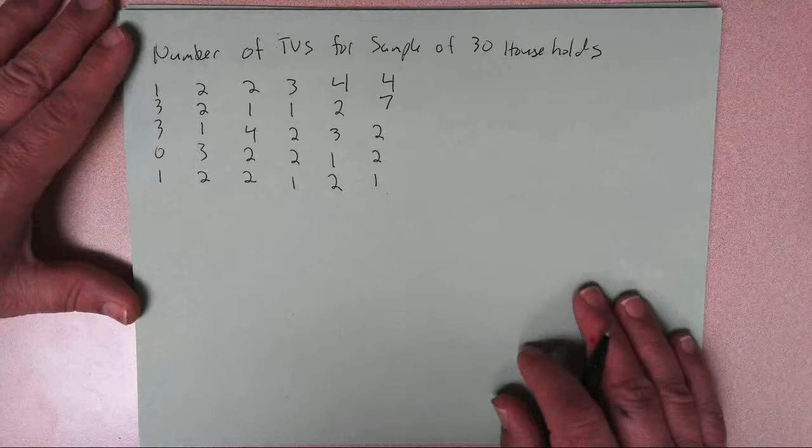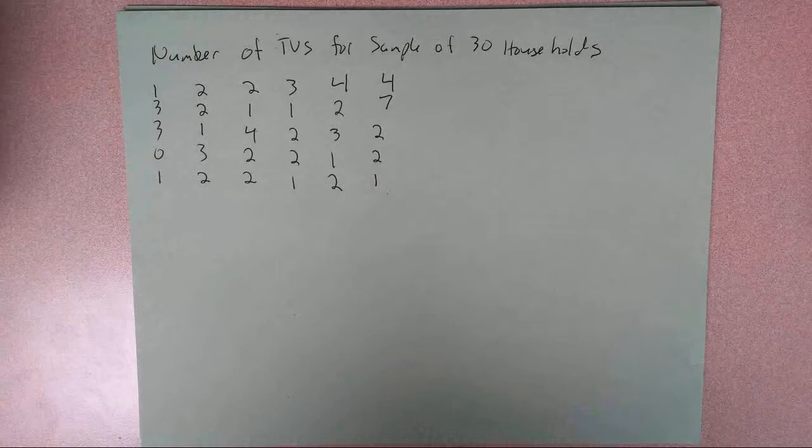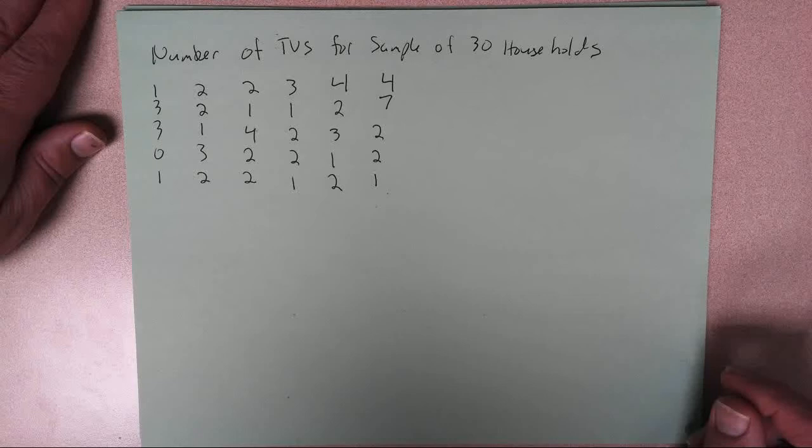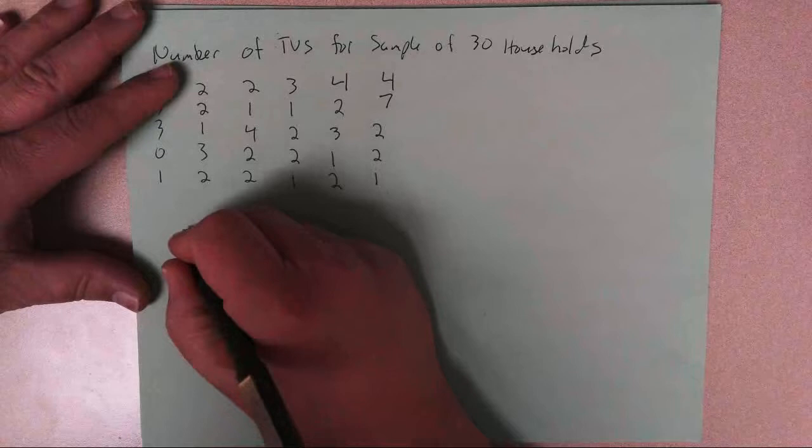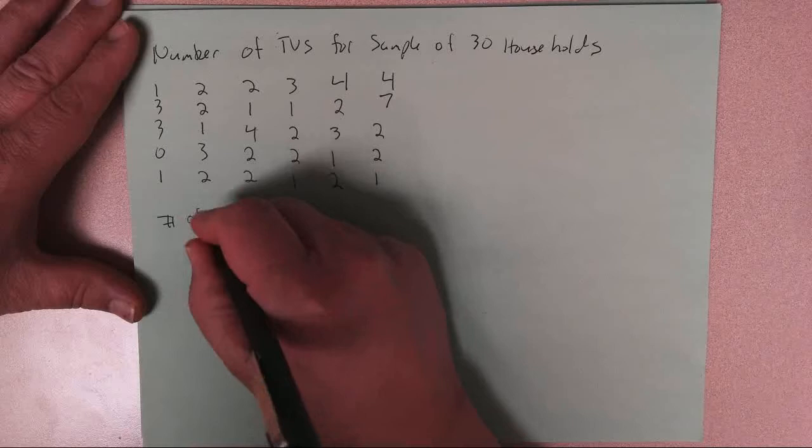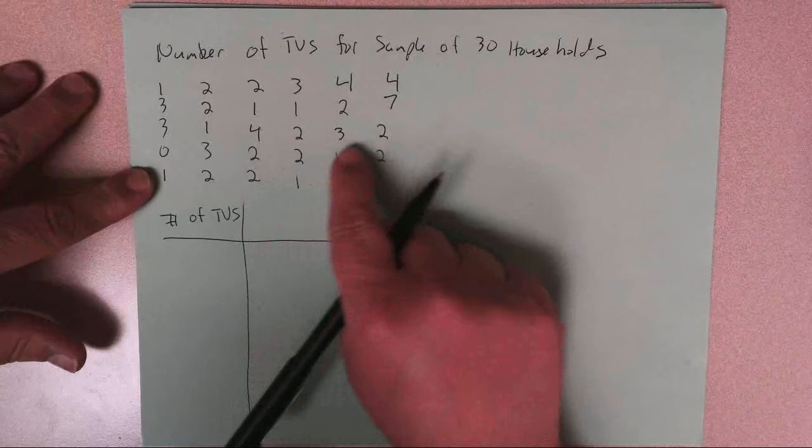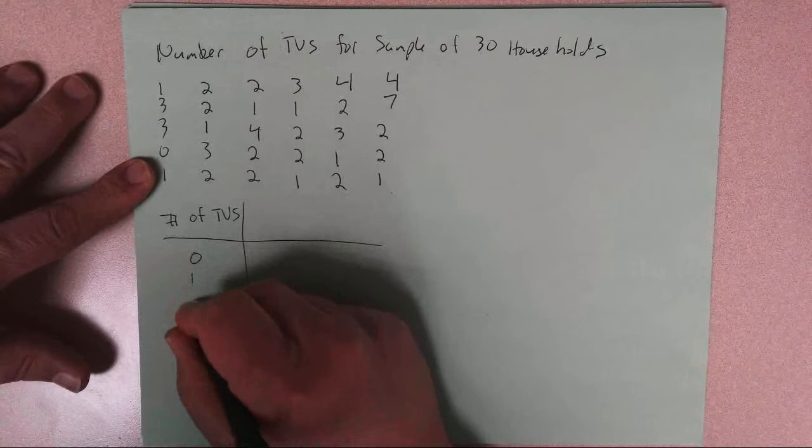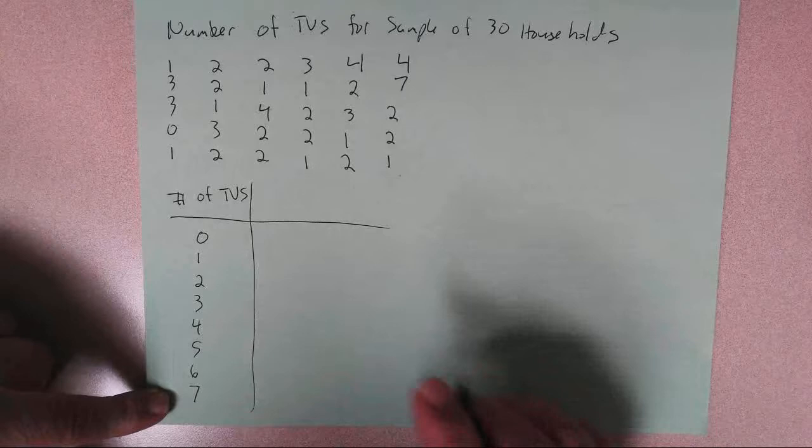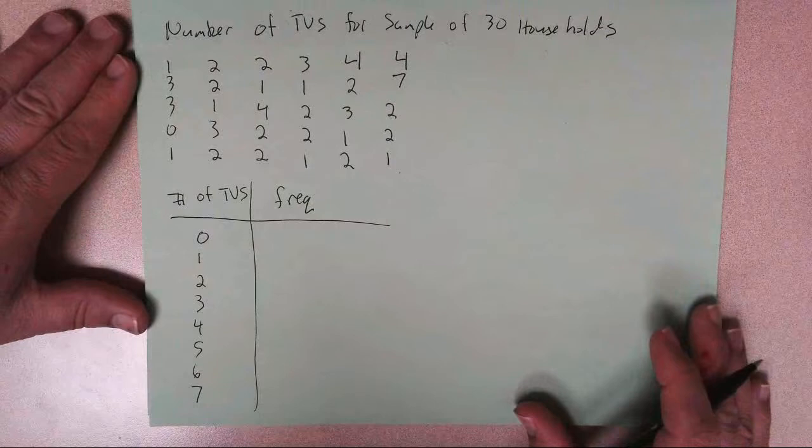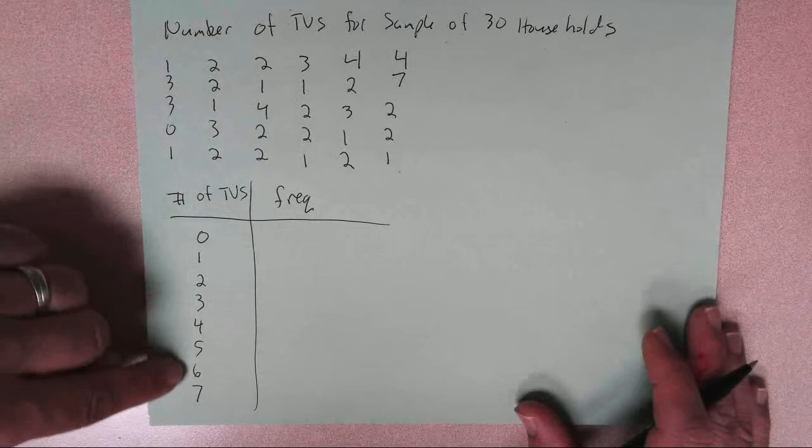To organize a data set, and this one's small enough I could look at it and see what's going on, but you can have data sets with thousands of values, pages and pages of numbers. What you do to organize a data set is you put them together in something called a frequency distribution. The idea here is I'm going to take number of TVs, and these are the possible values. These go from 0 to 7. 0 is the min, 7 is the max, and I'm going to put those in here. These are known as the classes. I have 8 different possible classes, and this column here is going to be the frequency. The frequency is the number of observations in your sample that lie in each of these classes.